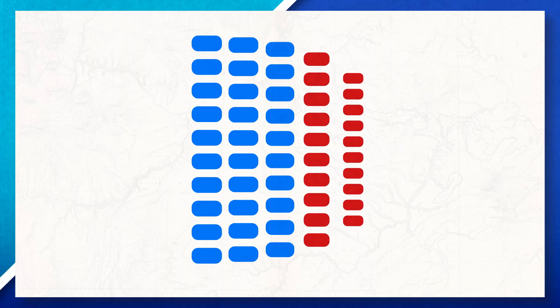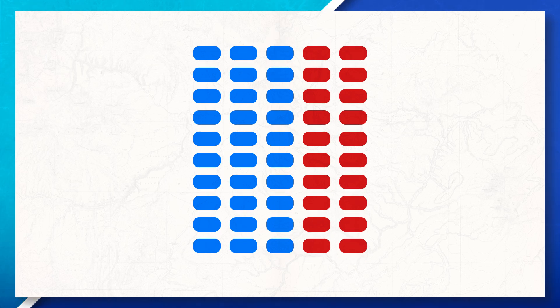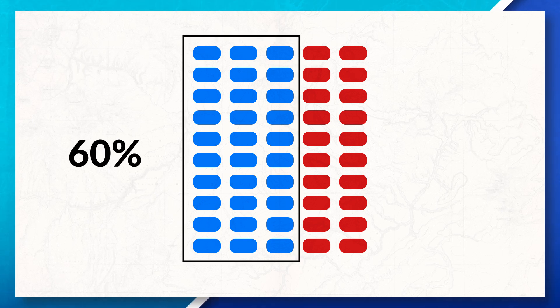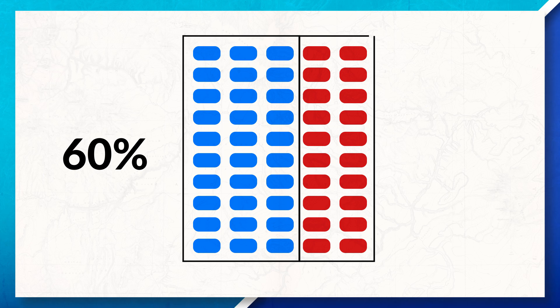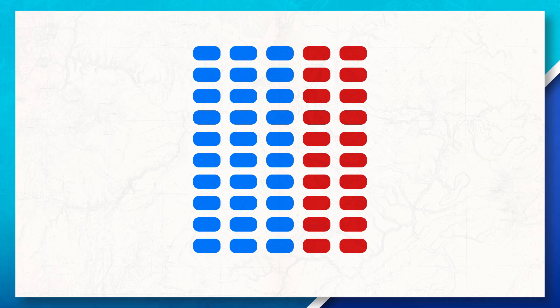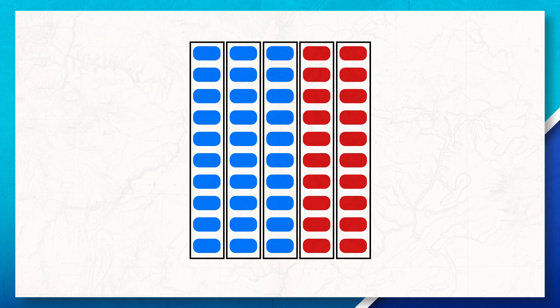Over the years, politicians have used gerrymandering in different ways in order to keep political power or to gain power in the future. To better understand how this works, let's look at an example. Here you can see each box represents a person, and the color represents their political party. We can see that the blue party has 60% of the votes and the red party has 40% of the votes. If we created our districts based on a perfect representation, we would get districts that would look like this.